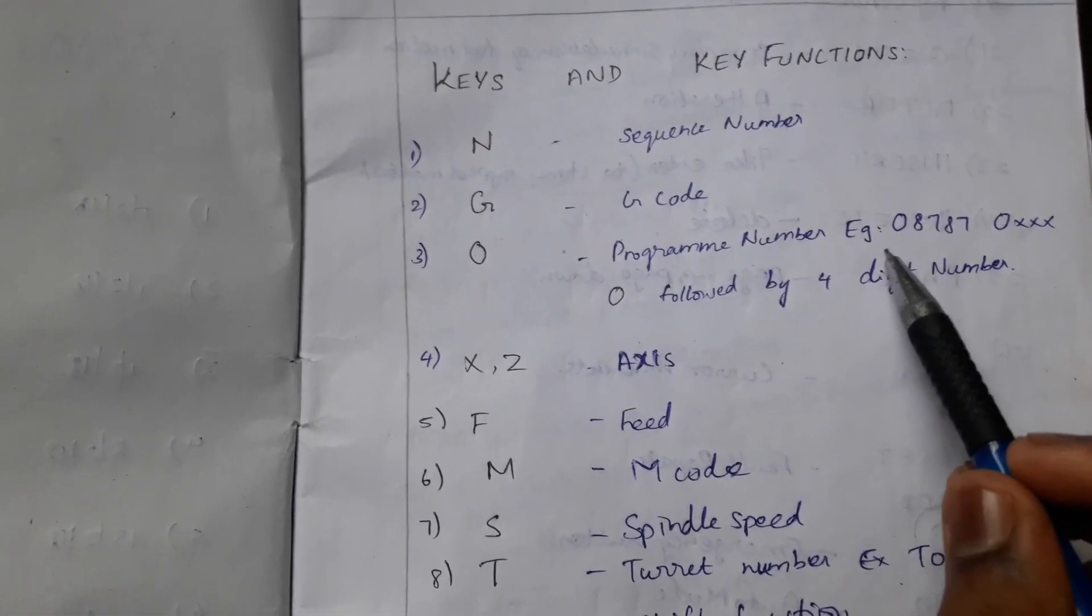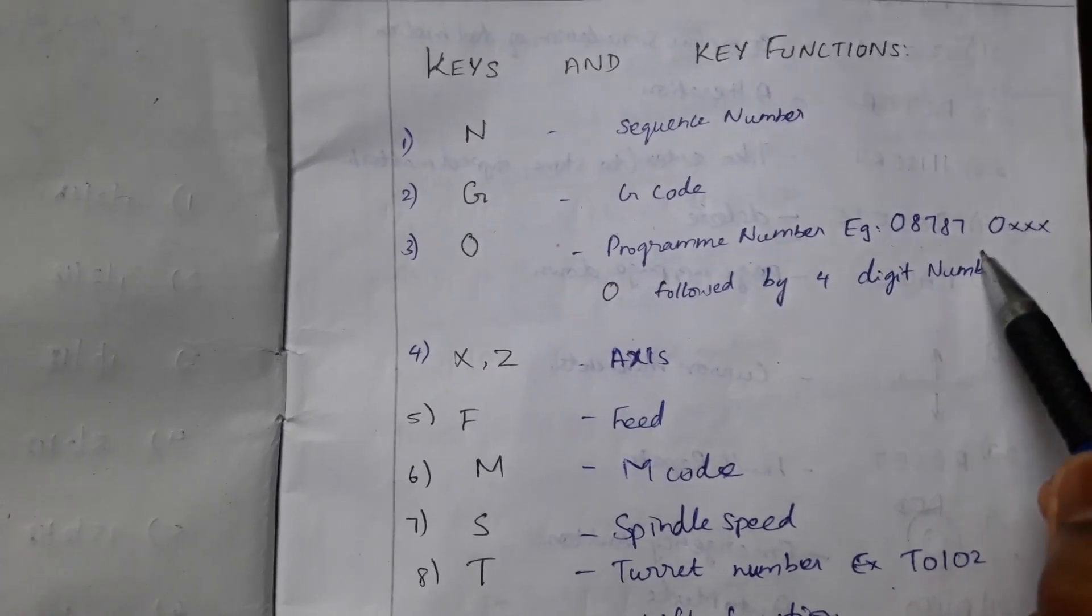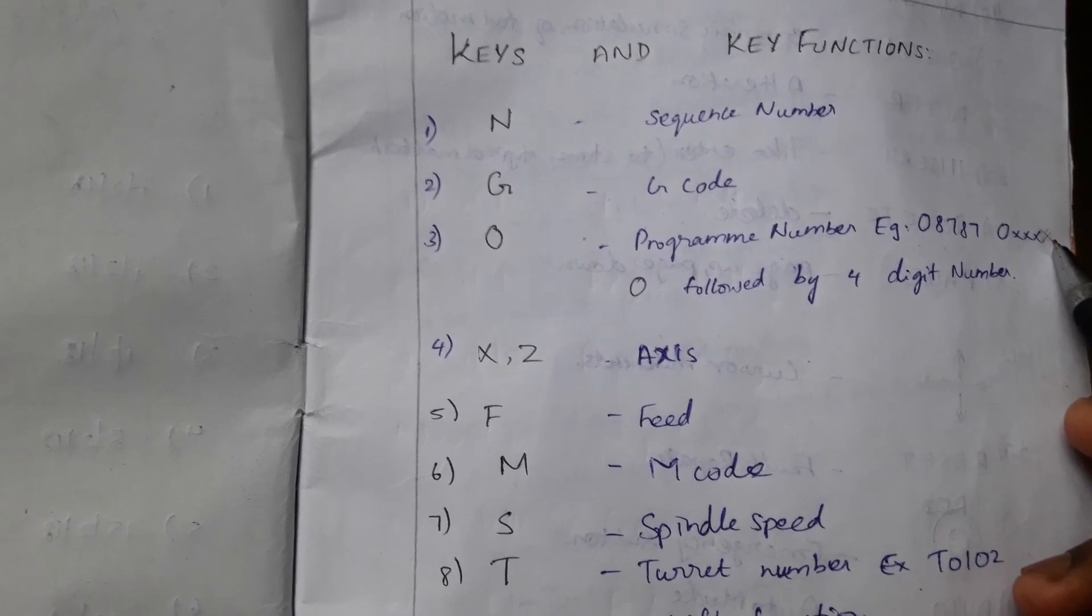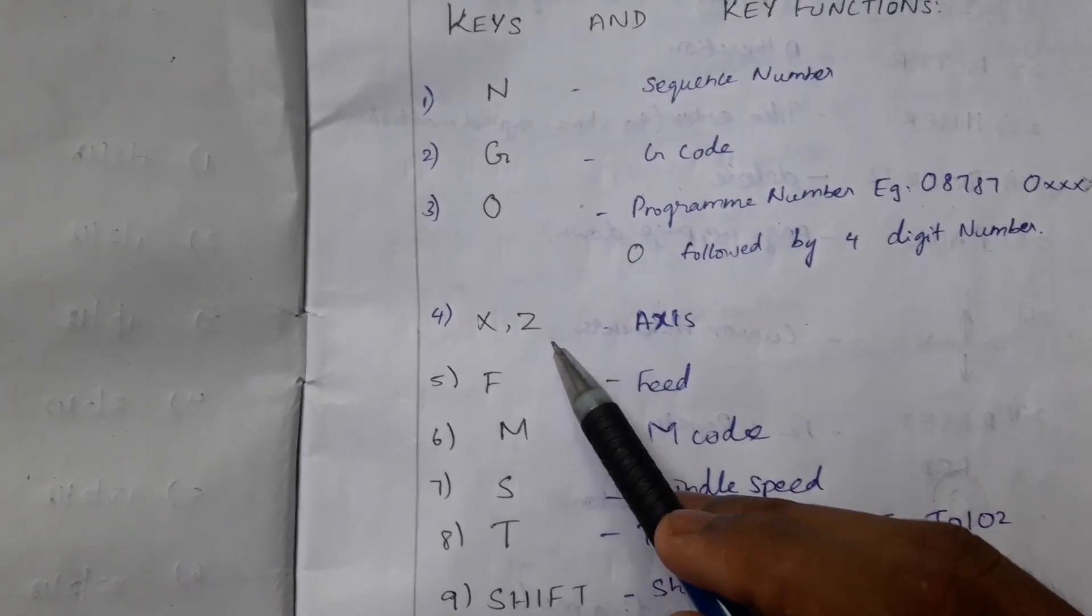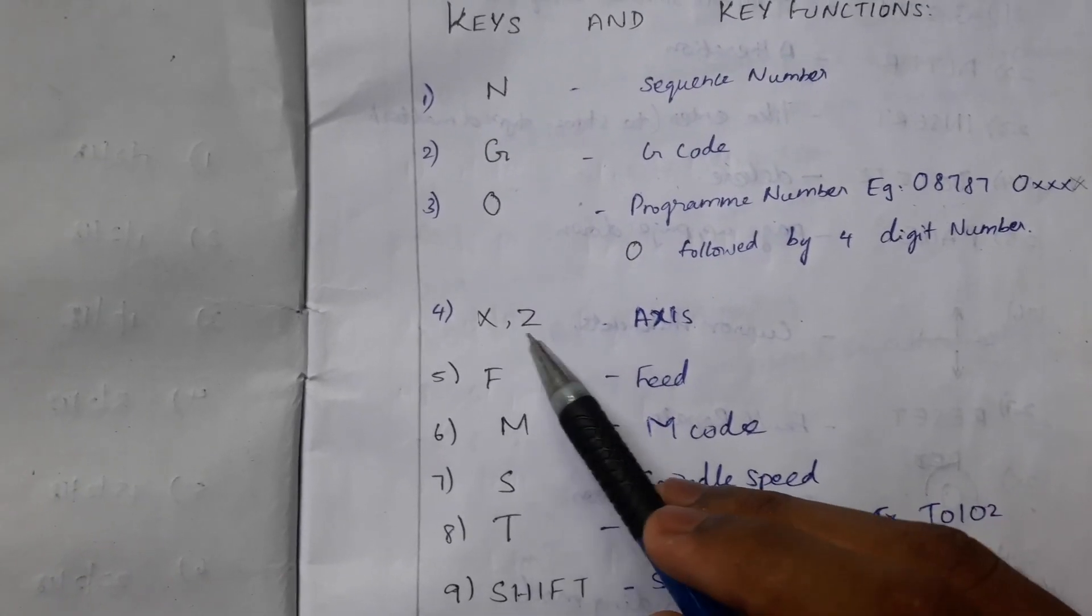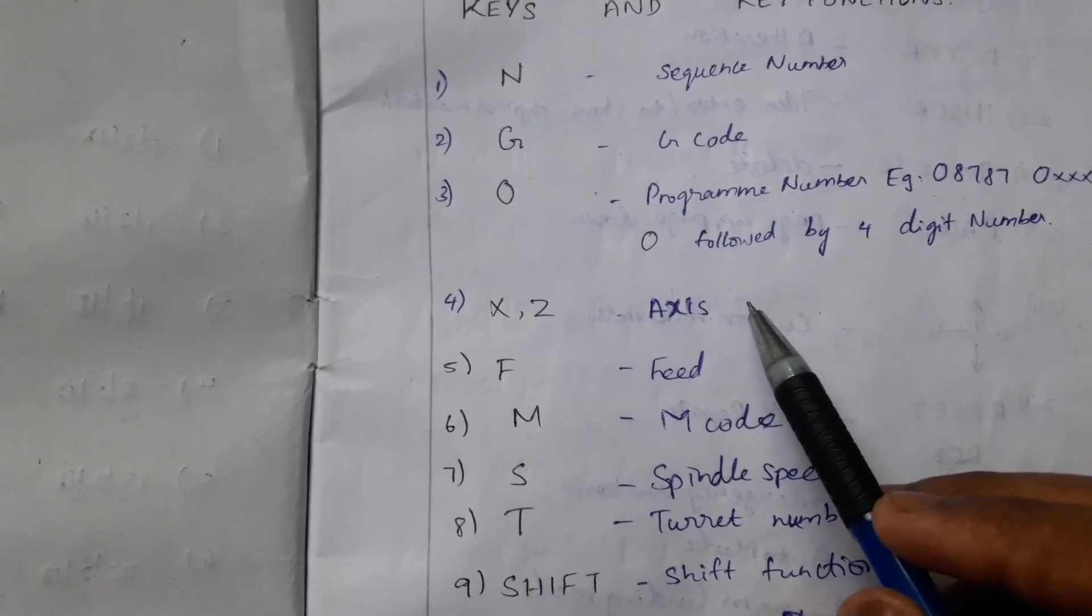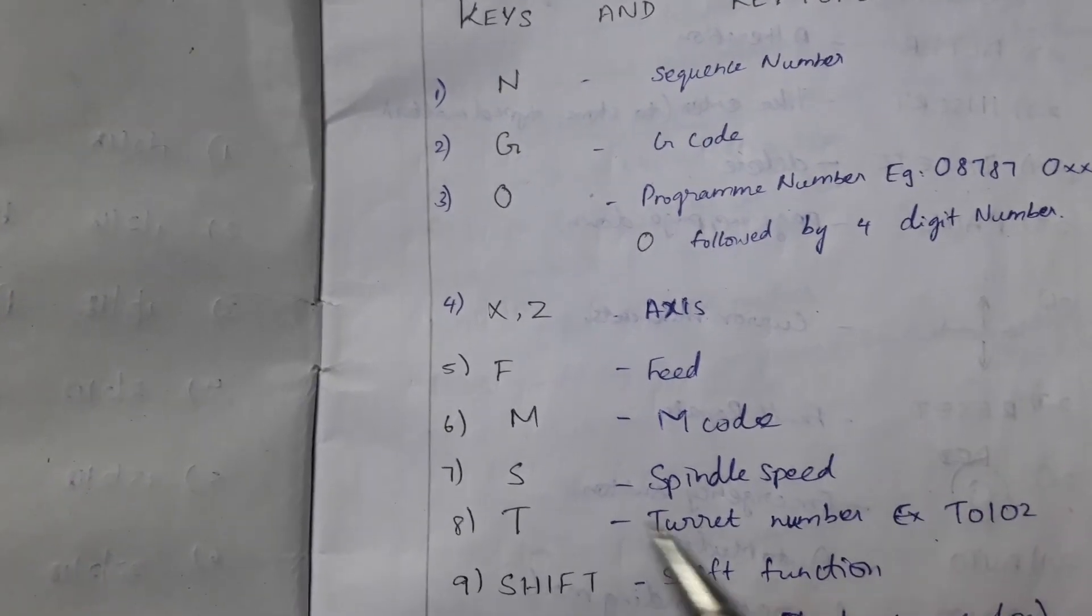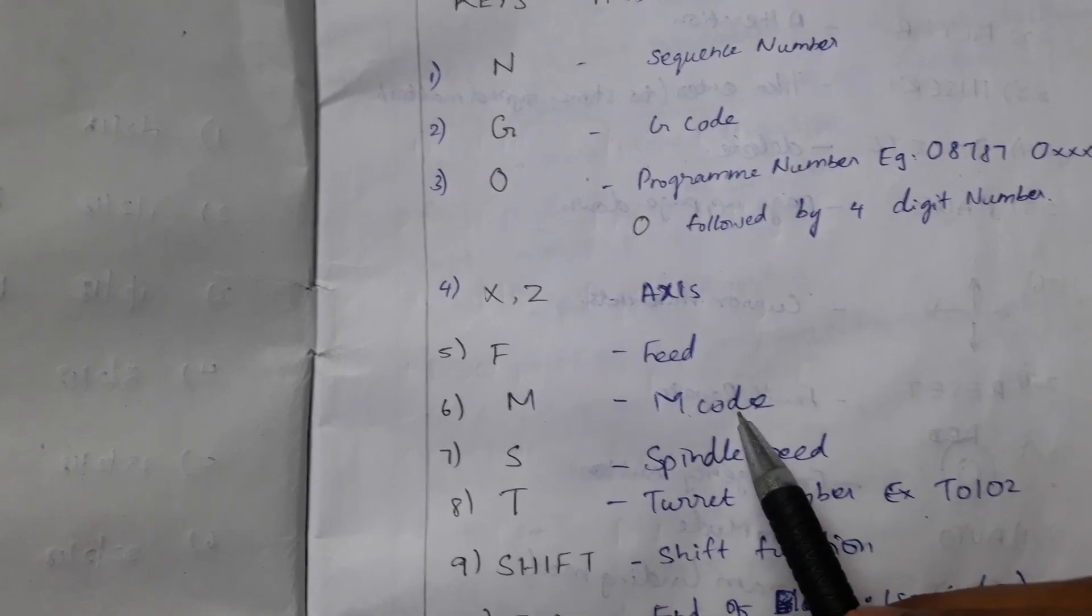Then X and Z. These are the axes X and Z used in lathe machines, whereas X, Y, Z axes are used in milling machines. F stands for feed. M, M code, so what is M code? It is the machine code.